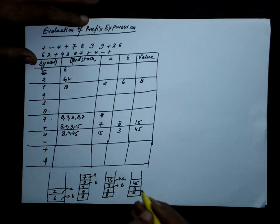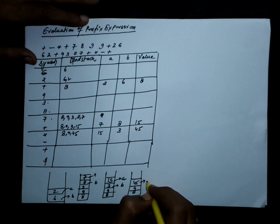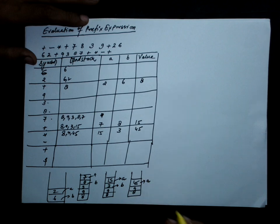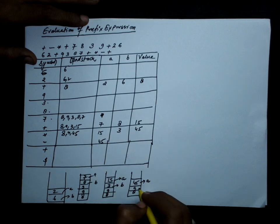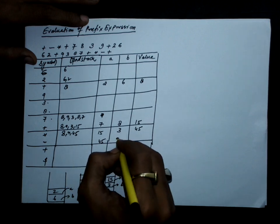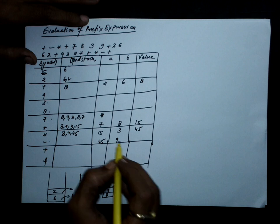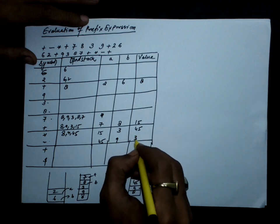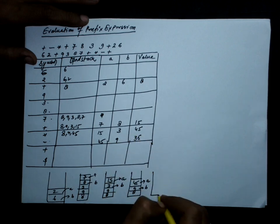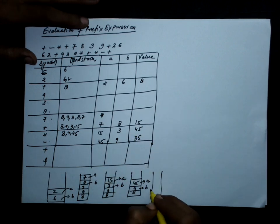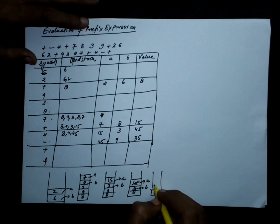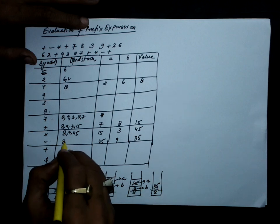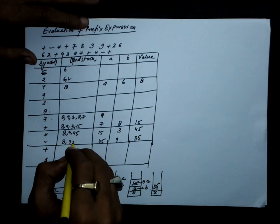After this, we have the minus symbol. Pop the stack twice. First popped value in A is 45. Next popped value in B is 9. 45 minus 9 equals 36. Push 36 on the stack. 8 was already there; these two values have been popped. So the condition of the stack is 8 and 36.